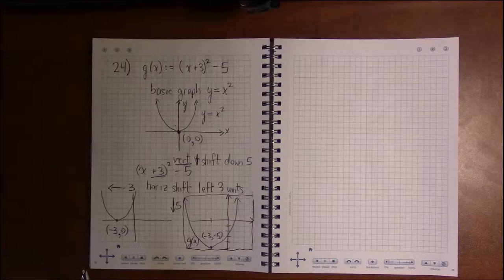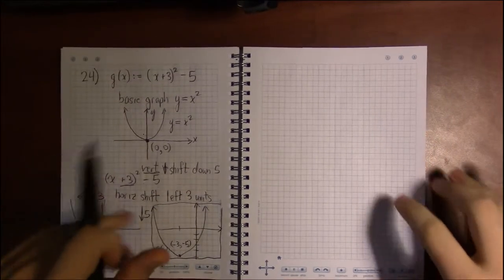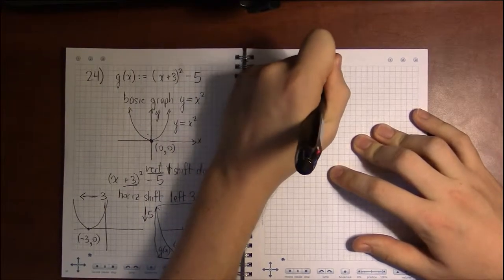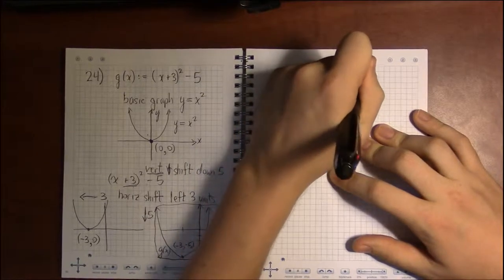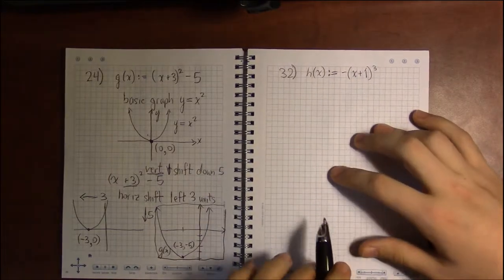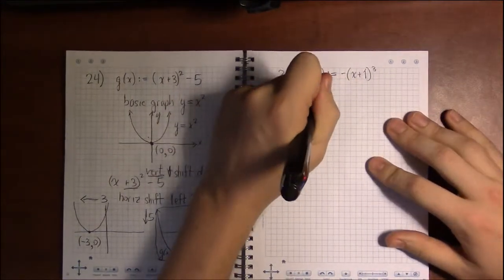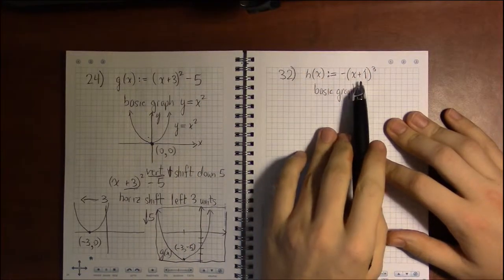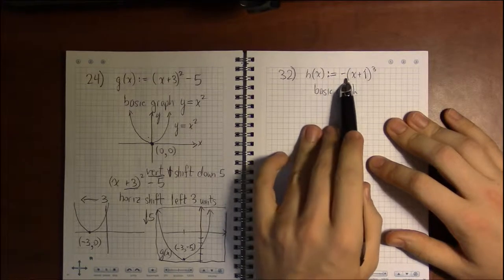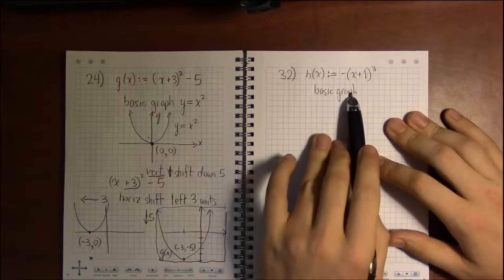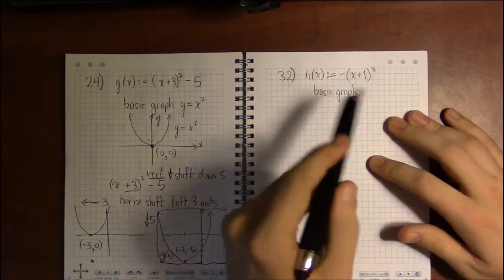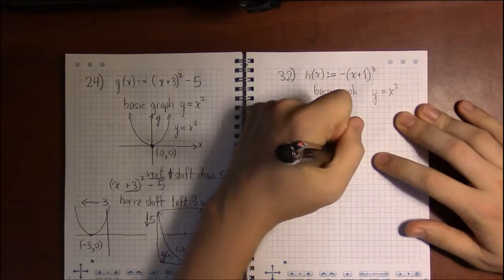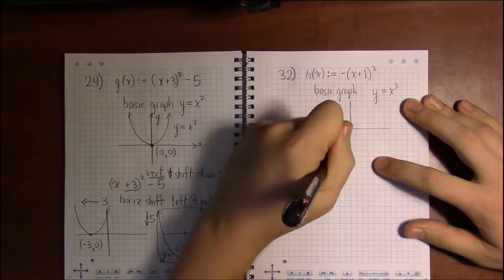But if you have trouble seeing that, you can do one transformation at a time. Let's do one more. Number 32, where we have h of x being defined as minus x plus 1 cubed. The plus 1 is a transformation, so we're going to ignore it to find the basic graph. Then the other thing, this negative, this also is a transformation, it's a reflection. So ignoring the negative, ignoring the plus 1, we're just left with x cubed.